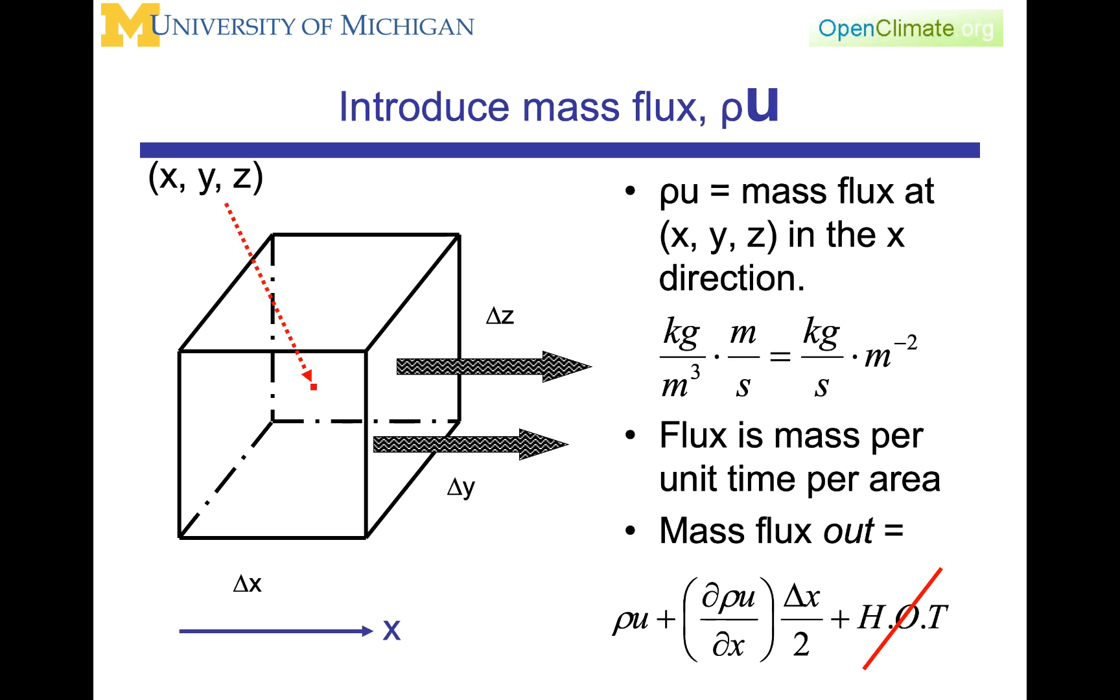To formalize that concept, we're going to consider a quantity called the mass flux, which will be rho times the velocity vector u. This idea of a flux will appear again and again. For example, a vorticity flux, an energy flux, and in all of these cases, by flux, we mean a quantity that is multiplied by a velocity. If you think about a stream of particles going past you, the mass that will be going past you will be related to the velocity, how fast that mass is going past you.